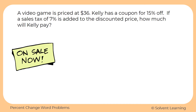Let's apply those concepts to solve this problem. A video game is priced at $36. Kelly has a coupon for 15% off. If a sales tax of 7% is added to the discounted price, how much will Kelly pay? The original price is $36. The 15% coupon causes a decrease in price — that's a percent decrease. The 7% sales tax is a percent increase. So we have two different percentages to apply to figure out exactly how much Kelly will pay.